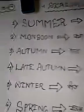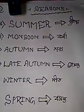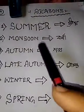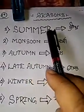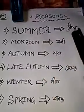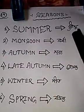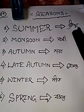We know there are six seasons. First of all, summer — S-U-M-M-E-R. In Bengali we say it Gisho.